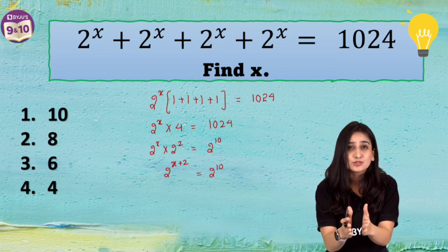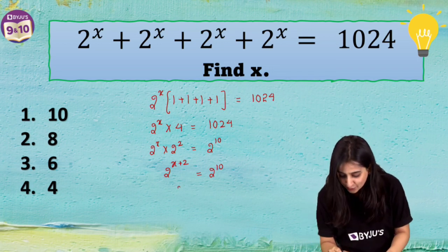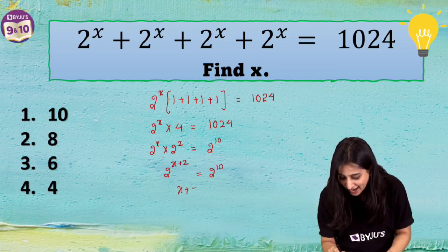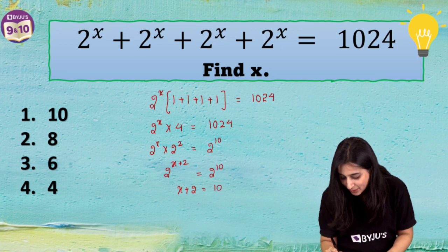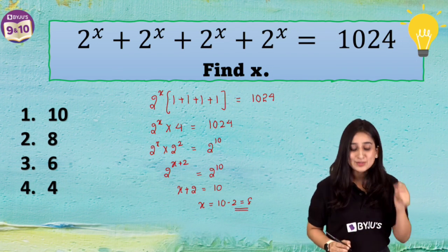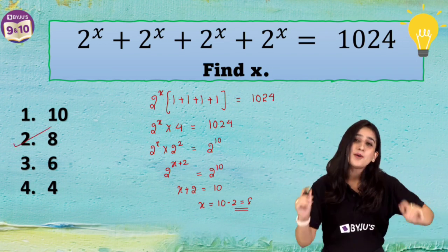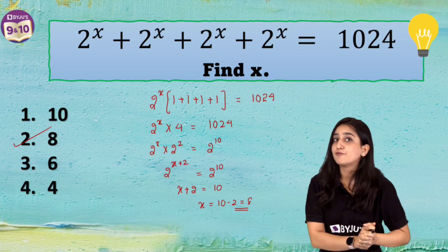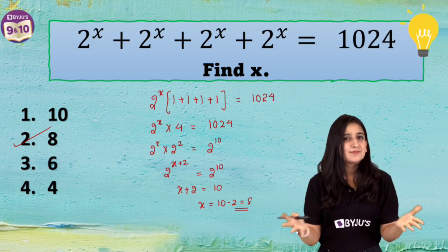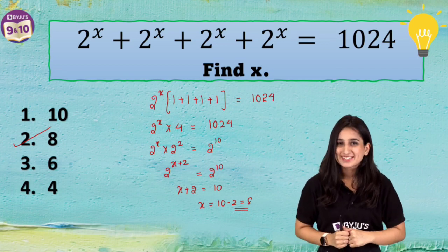Since the bases are equal, we can equate the powers as well. So x plus 2 equals 10, which gives us x equals 10 minus 2, which is 8. So the right answer is 8. I hope your answer was correct — let me know in the comments and subscribe for more videos.